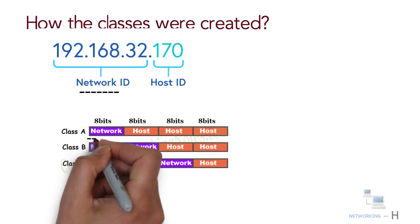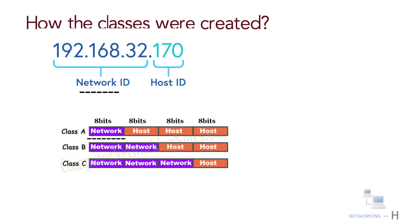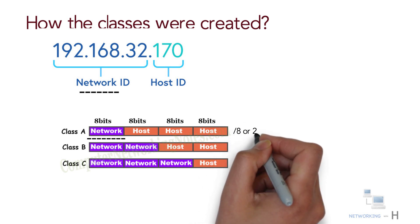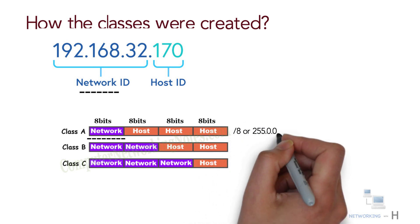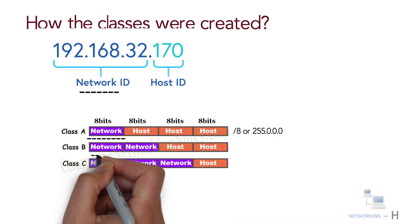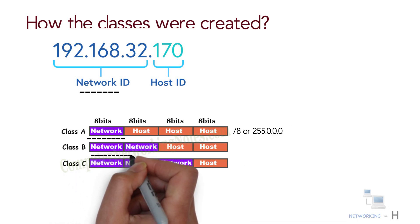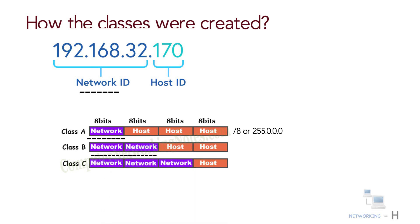In Class A, the first 8 bits are reserved for network addresses, which gives you the subnet mask of slash 8 or 255.0.0.0. In Class B, the first 16 bits are reserved for network addresses, which gives you the subnet mask of slash 16 or 255.255.0.0.